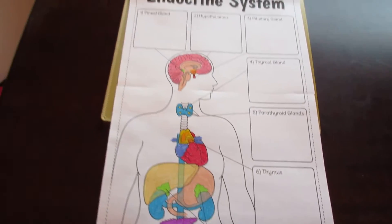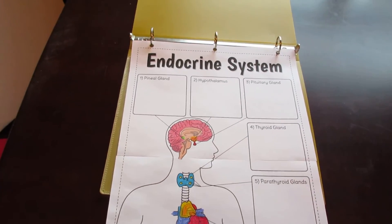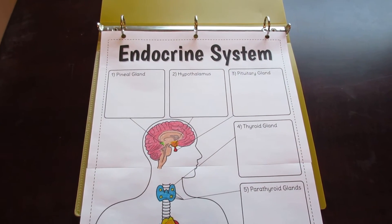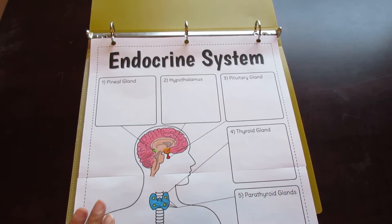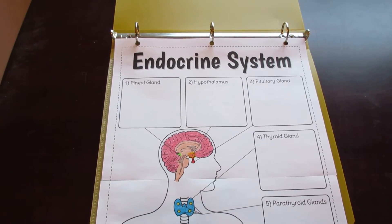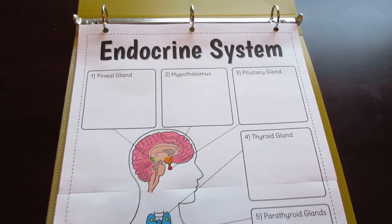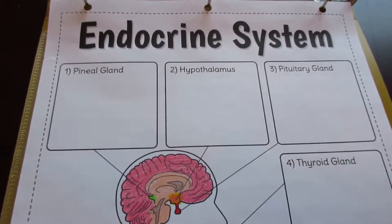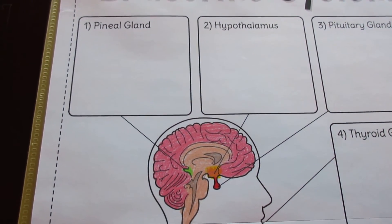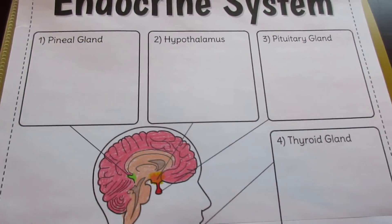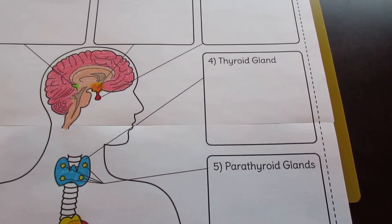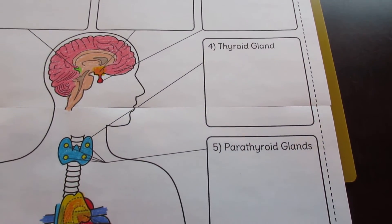This particular foldable is one of various options that I provide to aid in differentiation. This particular one is quite comprehensive for helping to lead students through a structured and guided lesson. For example, each structure connects to a numbered description box and labels are also provided. This allows you to go step by step through the lesson and reference each number and label as you go along.